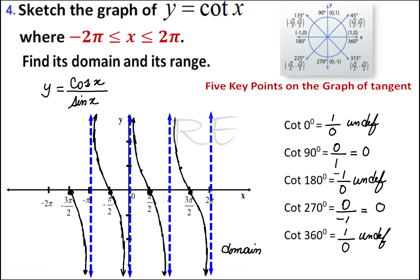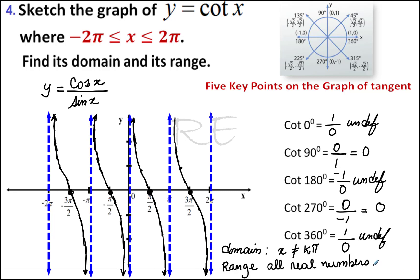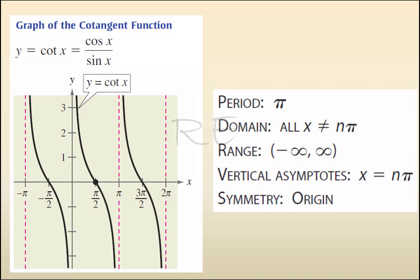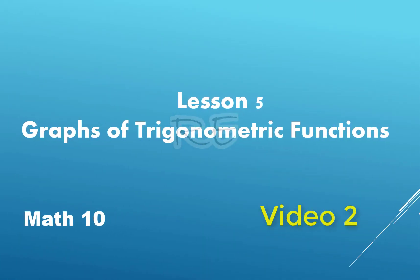The domain will be all x except integer multiples of pi, and the range is all real numbers. Period pi, domain all x except n pi, range from negative infinity to infinity, symmetry about the origin, and vertical asymptotes at x equal to n pi. To be continued.